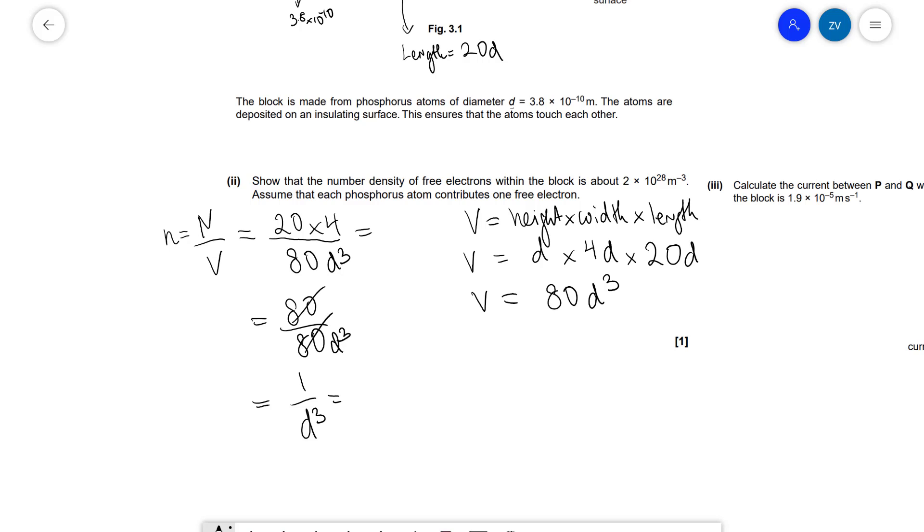But hang on a minute, we're given the diameter. We know that d is 3.8 × 10⁻¹⁰. So this is equal to 1 over (3.8 × 10⁻¹⁰)³. And if we put this into a calculator we're going to get about 1.8 × 10²⁸, which is very close to the value that we've been asked to get, which is 2 × 10²⁸.